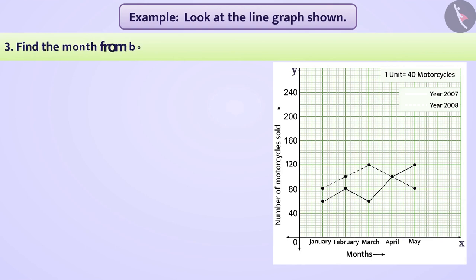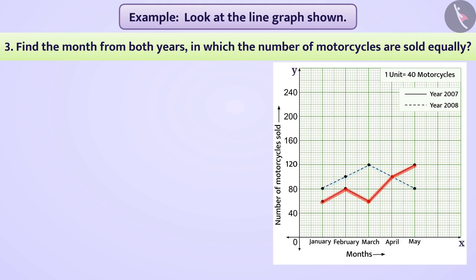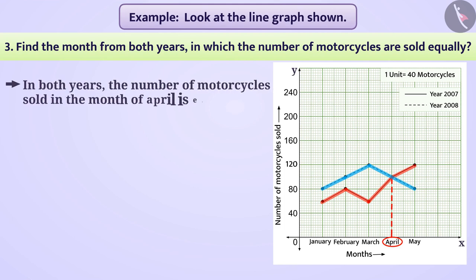Find the month from both years in which the number of motorcycles are sold equally. In the graph, the continuous line and the dotted line intersect at a point. The intersection point is located in April. This tells us that in both years, the number of motorcycles sold in the month of April is equal.